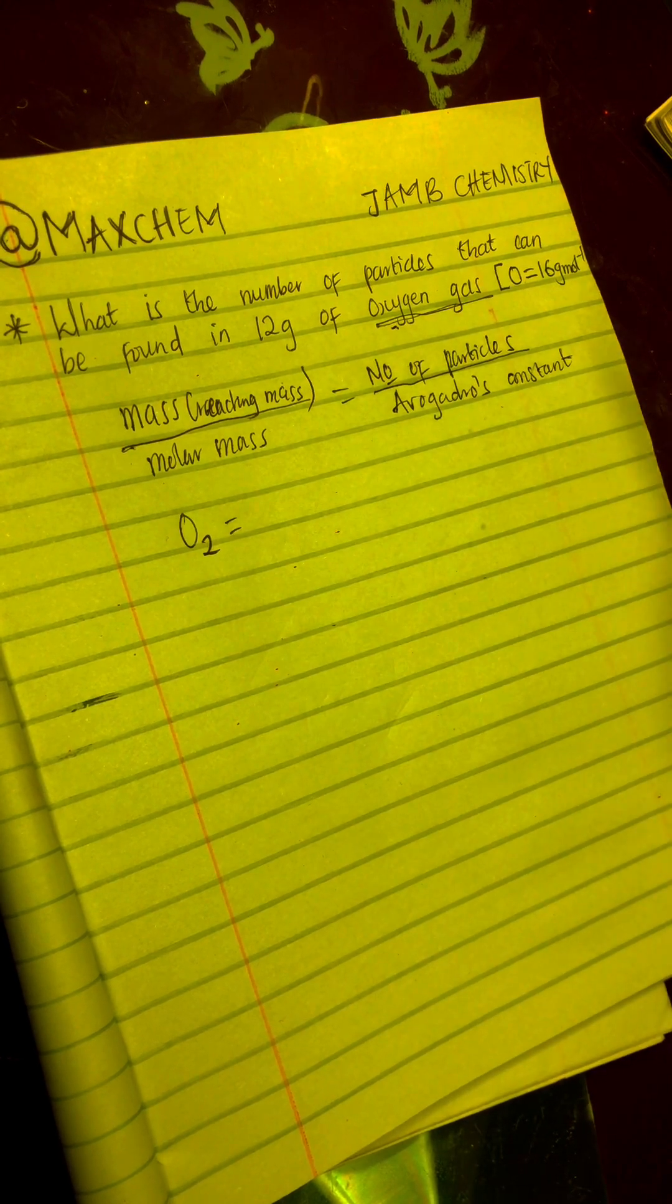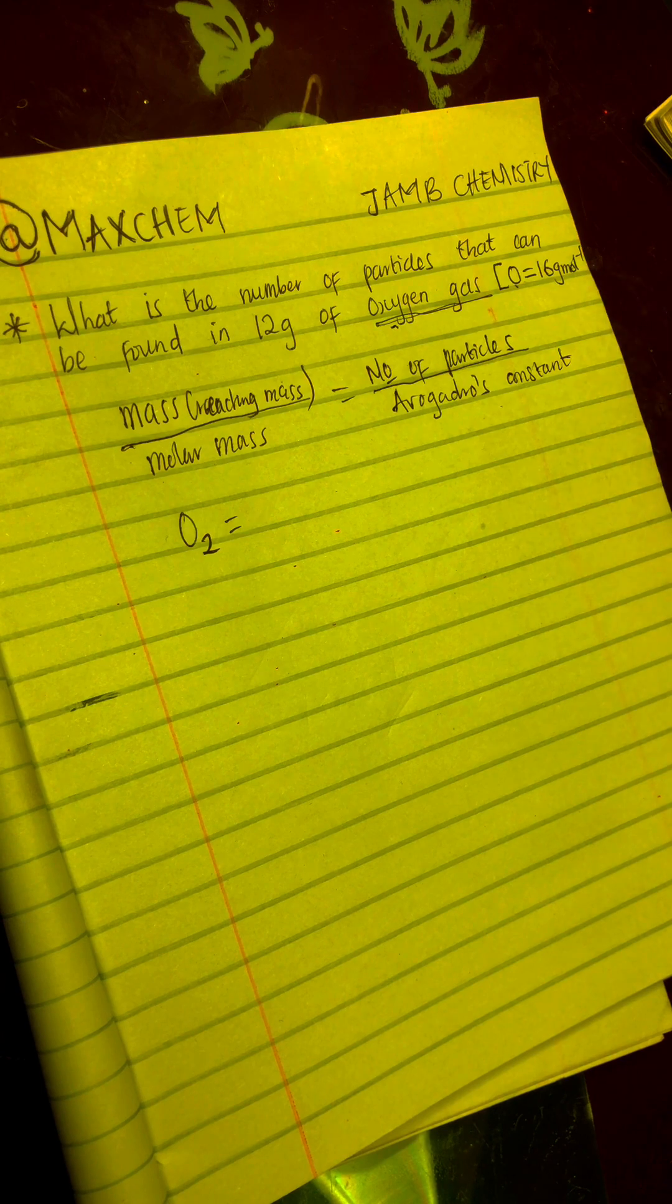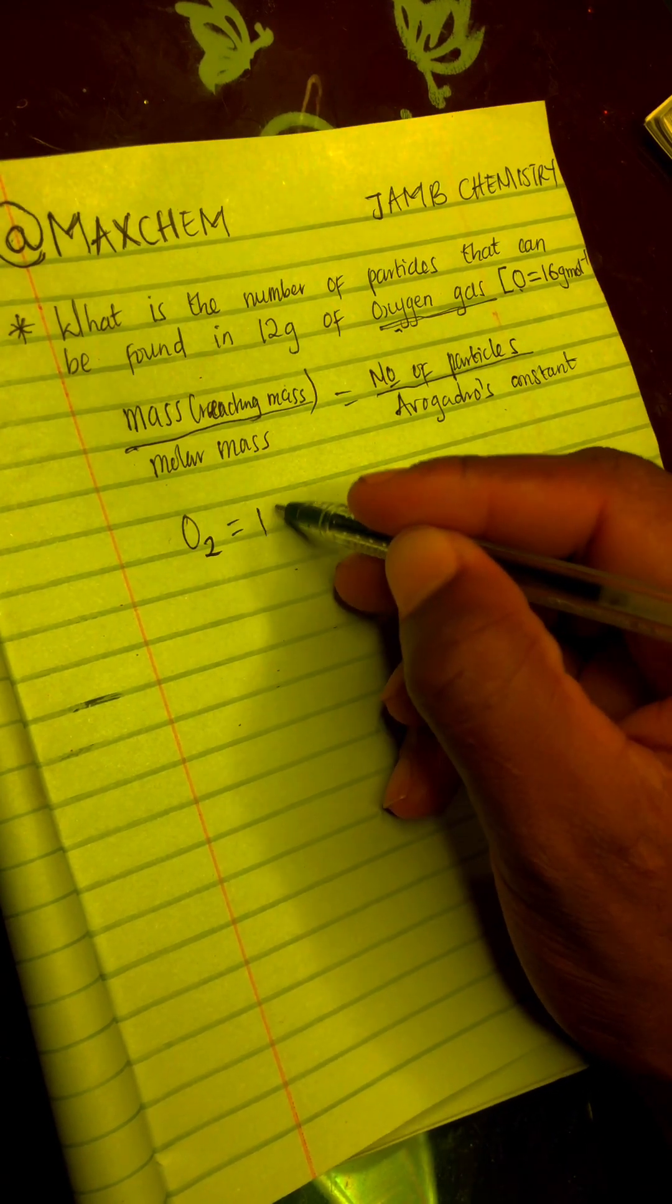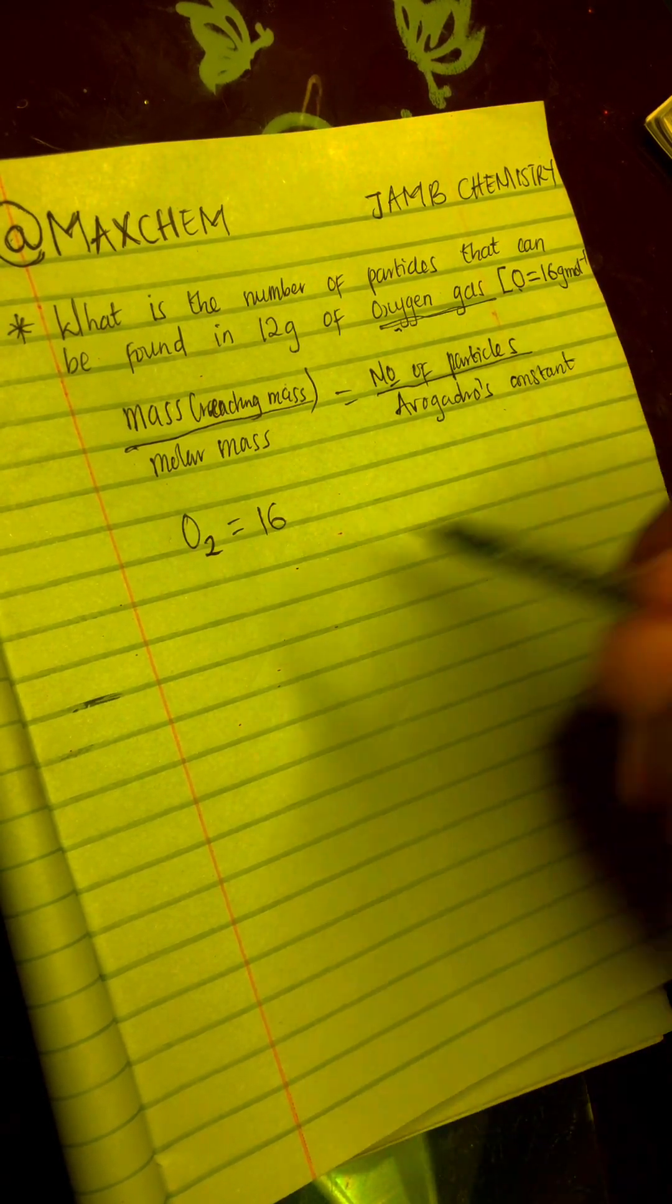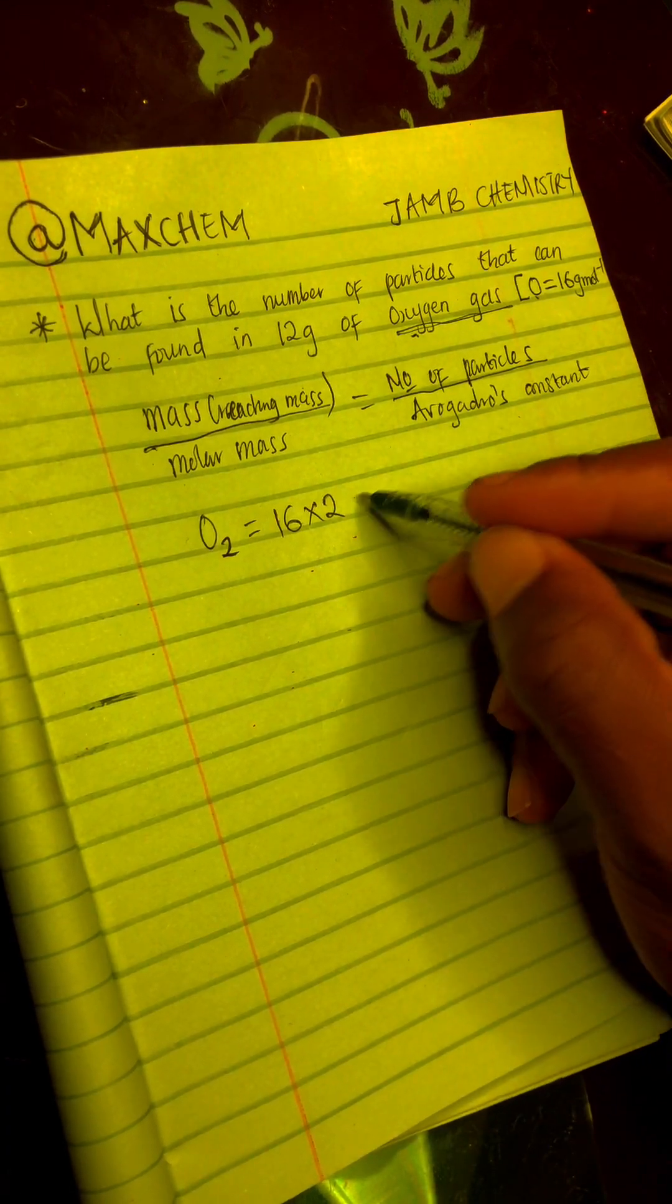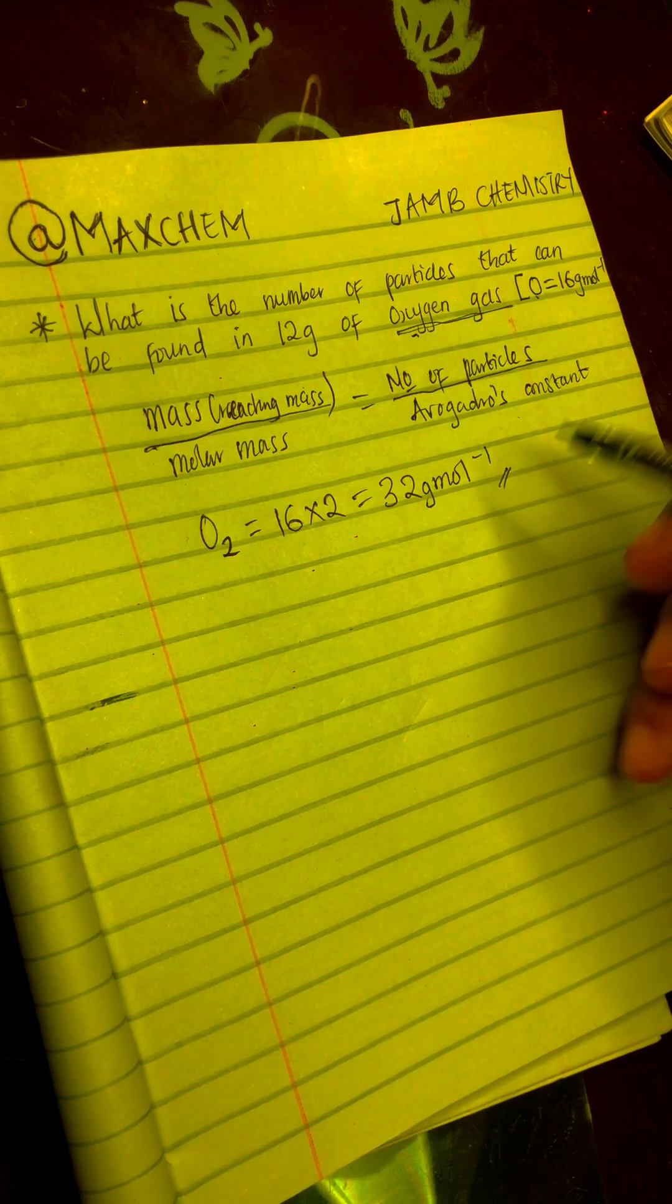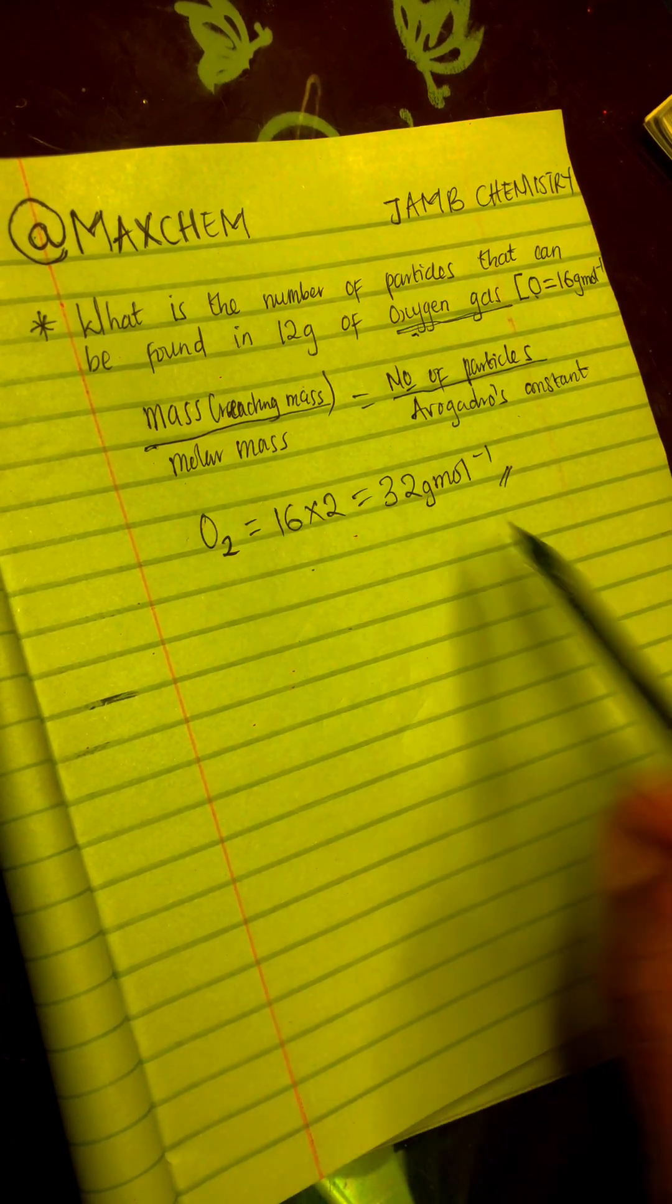Now we are given the atomic mass of oxygen atom to be 16 grams per mole. So the molecular mass of oxygen gas is going to be 16 times 2, which is going to be 32 grams per mole. So that is what we are going to use as our molar mass in this particular question. Let's continue.